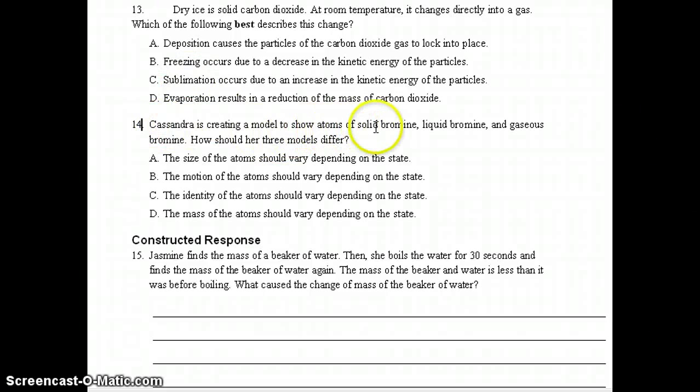Number 14, Cassandra is creating a model to show atoms of solid bromine, liquid bromine, and gaseous bromine. How should her three models differ? The correct answer should be B, the motion of the atoms should vary depending on the state. That is the only thing that will be different. It will be the motion of the atoms. The identity of them will stay the same, the mass will stay the same, the size will stay the same. Only the motion will vary. Number 15, Jasmine finds the mass of a beaker of water. Then she boils the water for 30 seconds and finds the mass of the beaker of water again. The mass of the beaker of water is less than it was before boiling. What caused the change of mass of the beaker of water? The correct answer? Some of the water was lost due to evaporation as the water was boiling. Some of it was converted to water vapor and lost in the gas form.